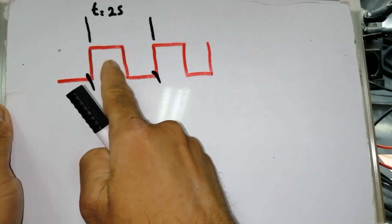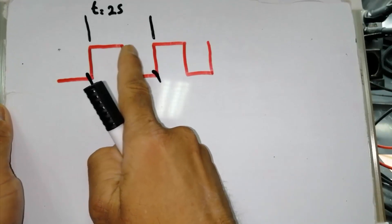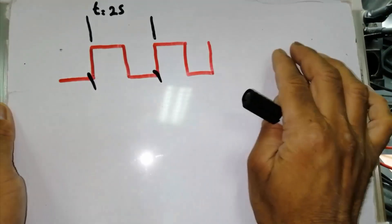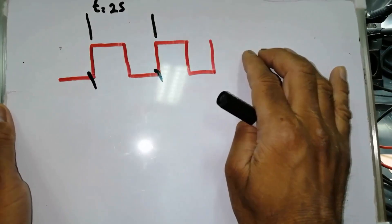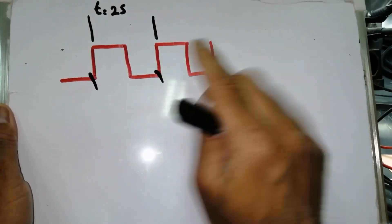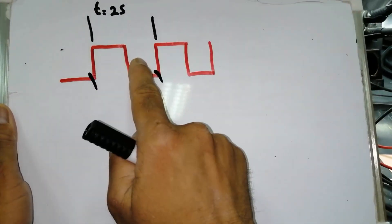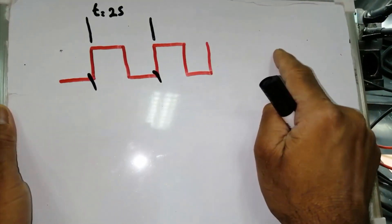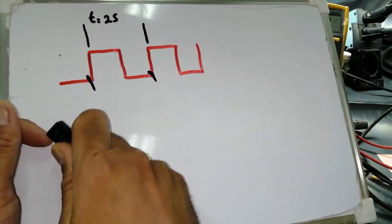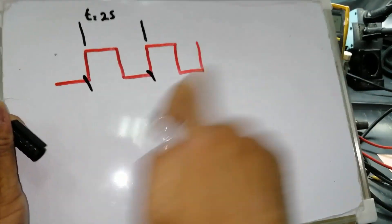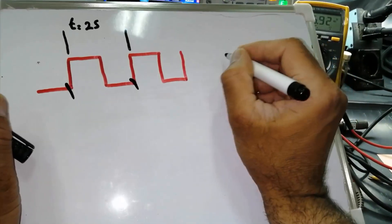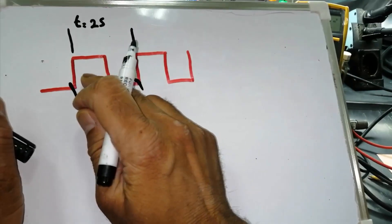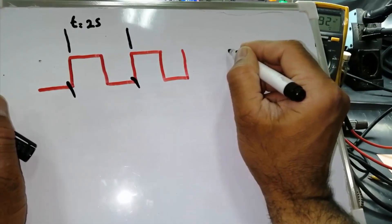In this two-second period, we have one second on and one second off. The circuit will remain on for one second and off for one second. So we say its efficiency, its working time — its duty cycle — is 50%.